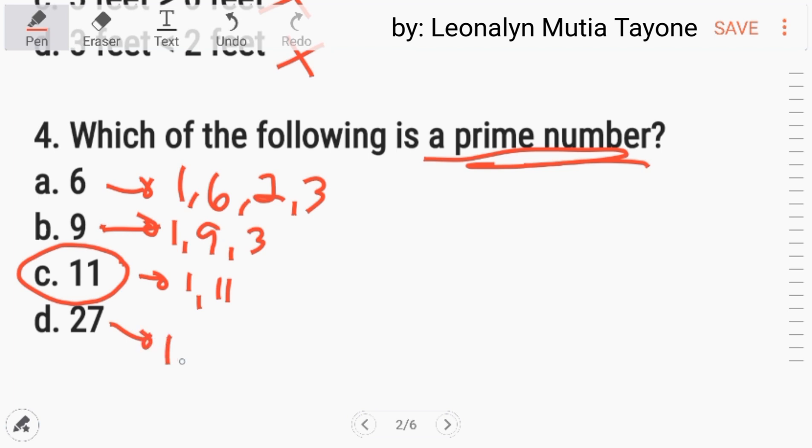Si eleven ay prime number kasi ang factors niya ay one lang at saka eleven. While si twenty-seven, maliban sa one at saka si twenty-seven, mayroon din siyang three at saka nine na mga factors. So, the answer here is letter C, eleven.